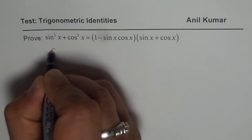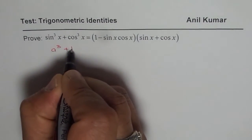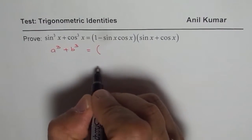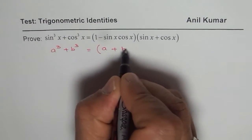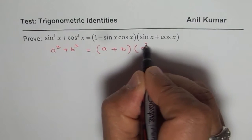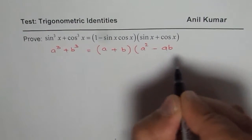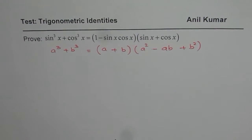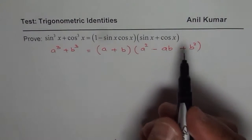I hope you remember the formula: a³ + b³ = (a + b)(a² - ab + b²). So this is the formula which we are going to use to prove the given identity.